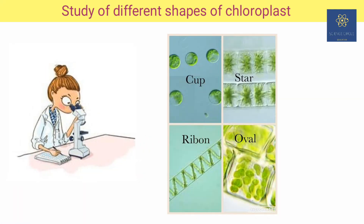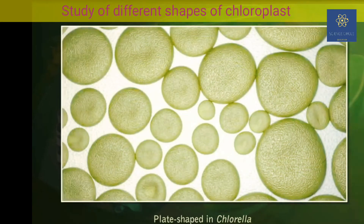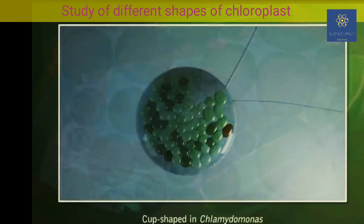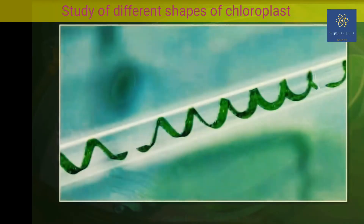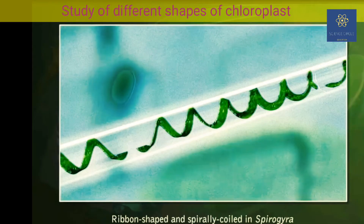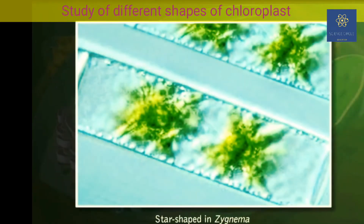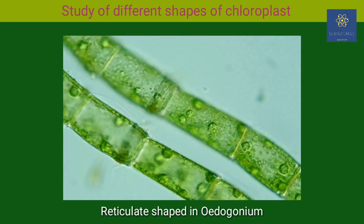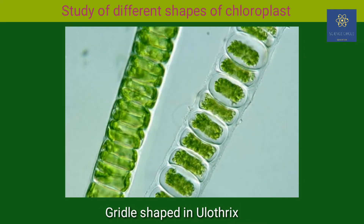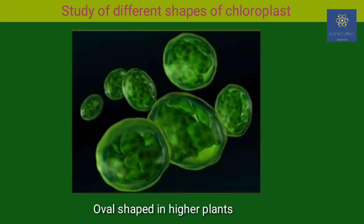There are different shapes of chloroplast: plate shape is observed in Chlorella; cup shaped or shoe shaped in Chlamydomonas; ribbon shaped in Spirogyra; star shaped in Zygnema; reticulate shaped in Oedogonium; and girdle shaped in Ulothrix. In higher plants, it is generally spherical or ovoid.